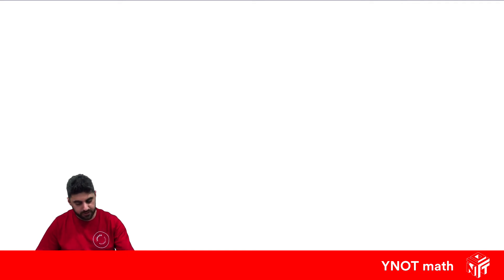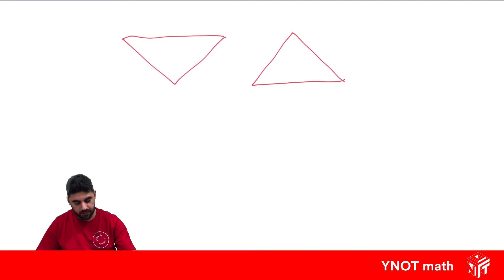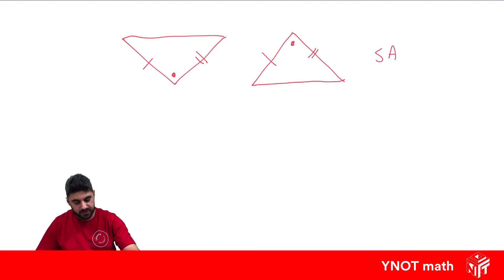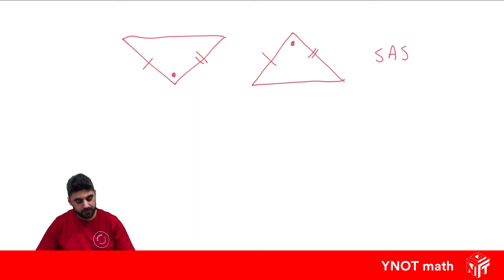So what congruent test would you use for these triangles? We have two triangles where this side equals this side, this side equals this side, and this angle equals this angle. We could use the SAS test because we have two pairs of sides being equal, and the angle in between those sides — the included angle — is also equal. We call that the included angle between two pairs of sides.